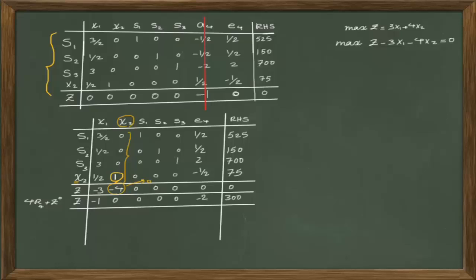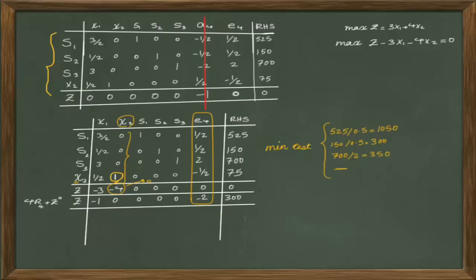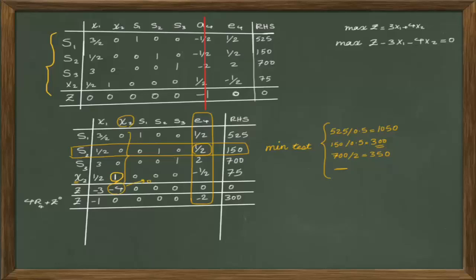We see two negative values in the row of z, so we continue by selecting the most negative, which is related to e4 — this is our pivot column. Implementing the minimum ratio test on positive pivot-column values, the minimum is in the second row. The pivot value is 1/2. In the next table, e4 replaces s2. We must also ensure the e4 column satisfies the basic variable condition: 1 in e4's row, 0 elsewhere.